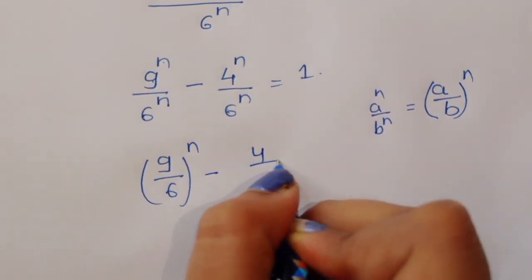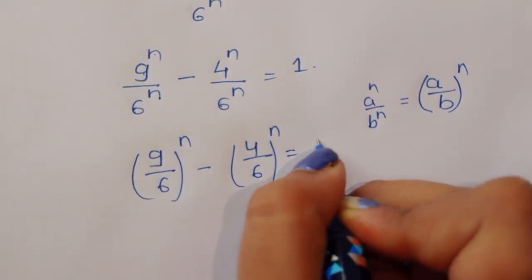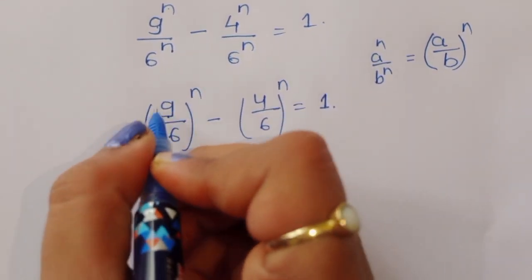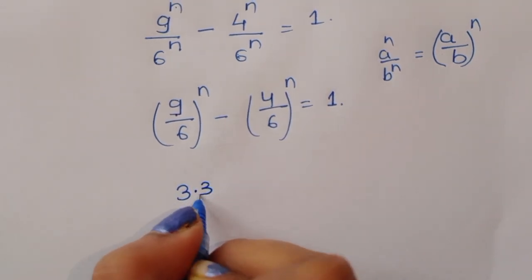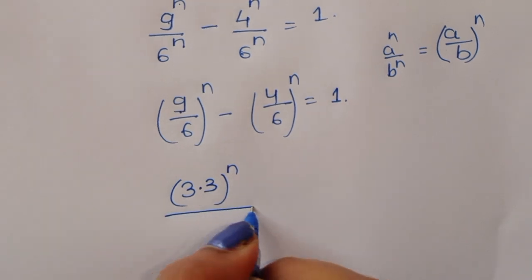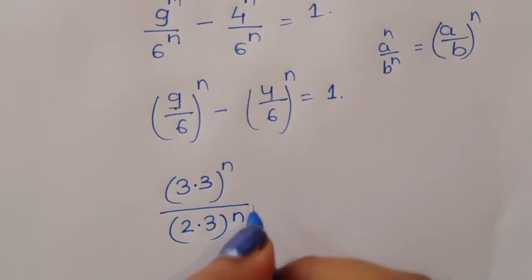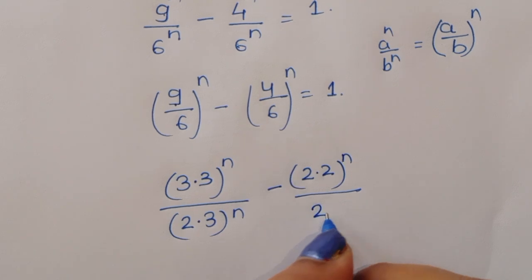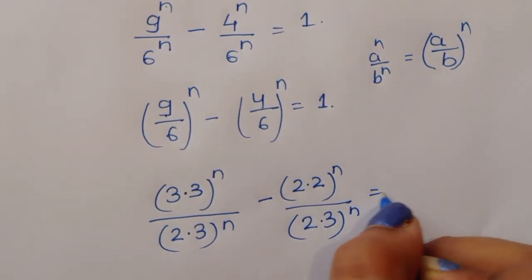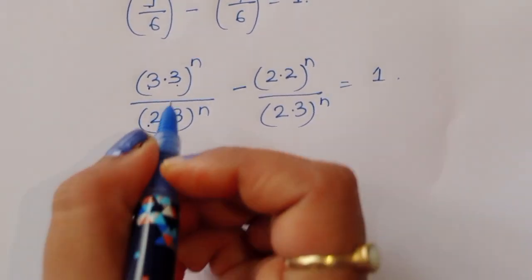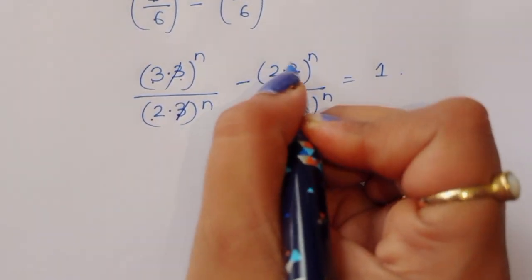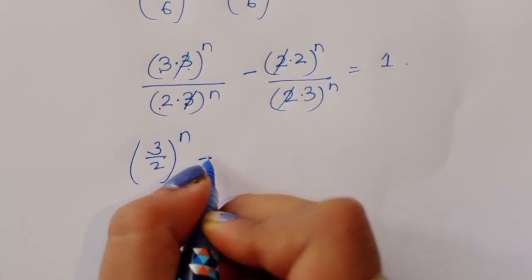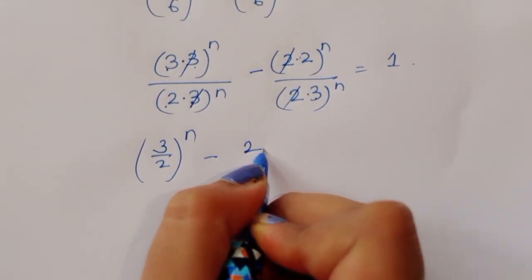Now 9 upon 6 power n minus 4 upon 6 power n is equal to 1. We can use factors: 3 times 3 is 9, and 2 times 3 is 6; 2 times 2 is 4, and 2 times 3 is 6. So we can cancel the 3 in numerator and denominator, and cancel the 2 in the other term.